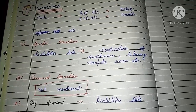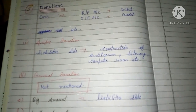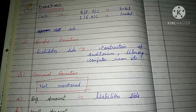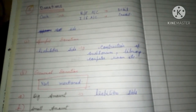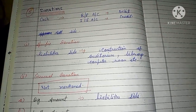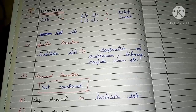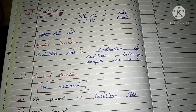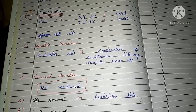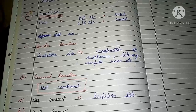There are two types of donations: specific donation and general donation. A specific donation is one given for a special purpose, such as the construction of an auditorium, library, or computer room.